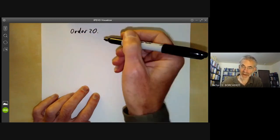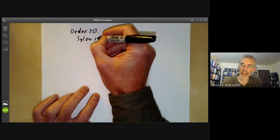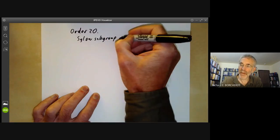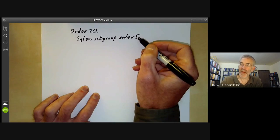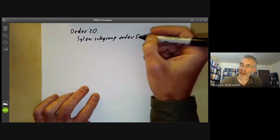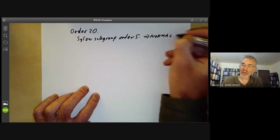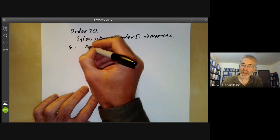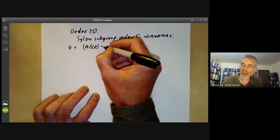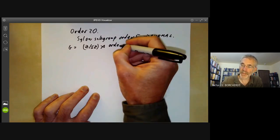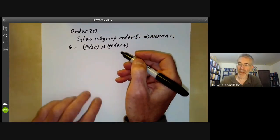By now it should be fairly obvious what we do. We notice that there is a Sylow subgroup of order 5 and the number of Sylow subgroups must divide the order of the group and be 1 mod 5 so this subgroup has to be normal. So we see easily that G is a semi-direct product of a cyclic group of order 5 with a group of order 4. Now we just run through all the possibilities and see what if anything interesting turns up.